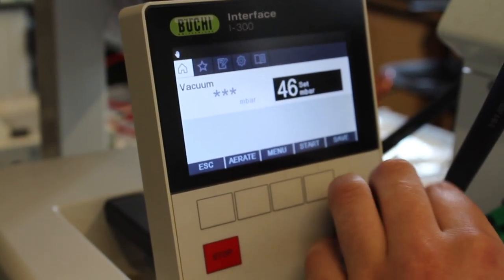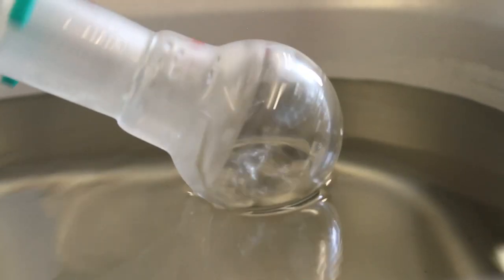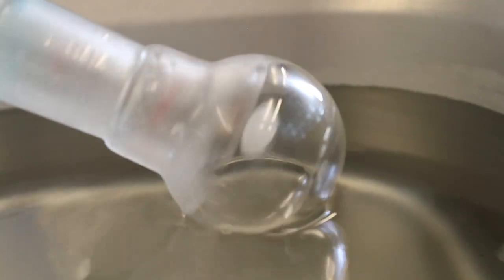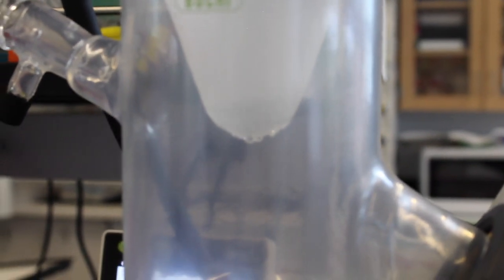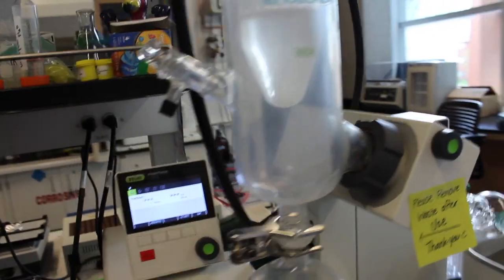As your round bottom flask rotates in the bath, you may notice bubbles form. As this occurs, the solvent is boiling and will begin to condense as it rises up the bump trap and comes into contact with the cold finger, where it will drip down into the collection flask below.